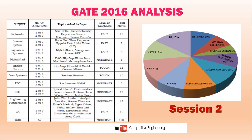In Session 2, the highest marks were asked in EMT — 12 marks — then Networks 10 marks, Communication System 10 marks, and Analog Circuits 11 marks. The difficulty level was moderate; total 65 questions for 100 marks and almost all questions were easy to moderate level. If you can trust me, prepare word by word in these topics and you can surely qualify GATE examination. It is not a very difficult exam.